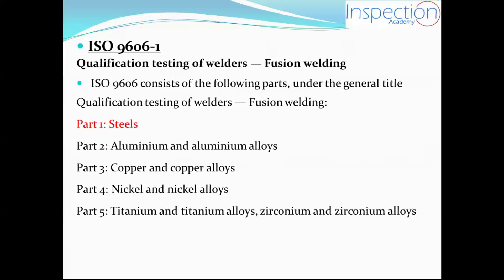Referring to the ISO code, it covers qualification testing of welders for fusion welding, showing how to qualify and test a welder. It contains five parts: Part 1 for steel, Part 2 for aluminium and aluminium alloys, Part 3 for copper and copper alloys, Part 4 for nickel and nickel alloys, and Part 5 for titanium, titanium alloys, zirconium, and zirconium alloys. We're going to focus on Part 9606-1, which is Part 1, talking about steels.